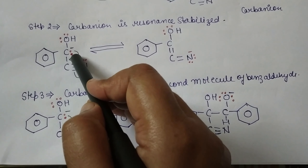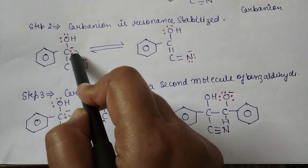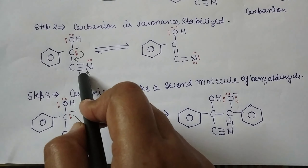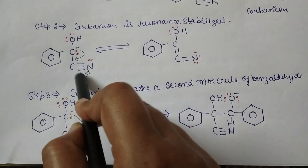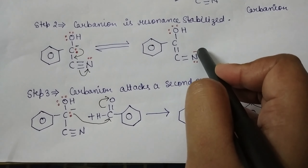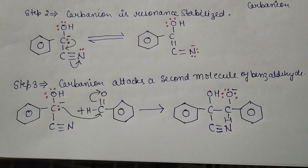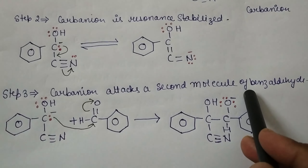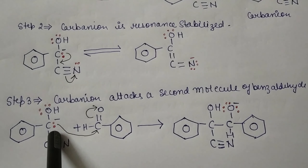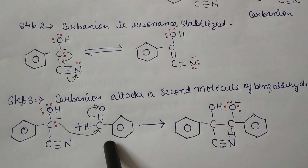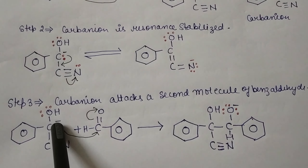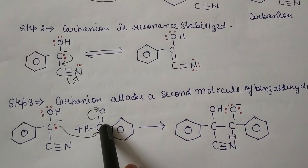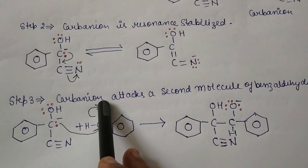In the second step, the carbanion is resonance stabilized. The negative charge moves between the two carbons and a double bond forms in this structure. The triple bond present between carbon and nitrogen in the cyanide converts into a double bond. The negative charge forms a bond between these two carbons, converting into a double bond, and the triple bond between carbon and nitrogen breaks so nitrogen acquires the negative charge.